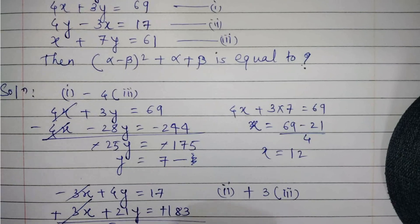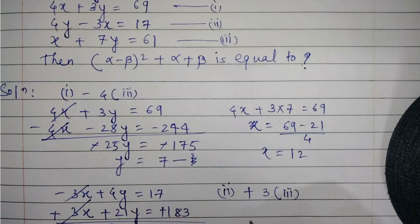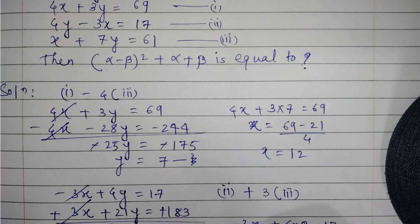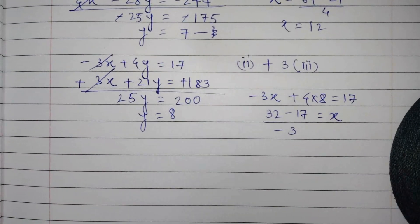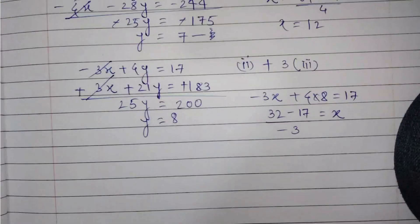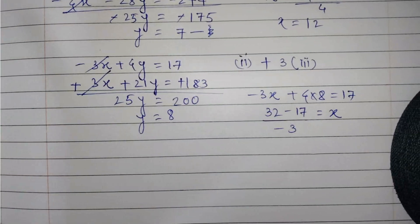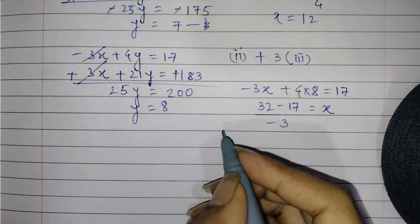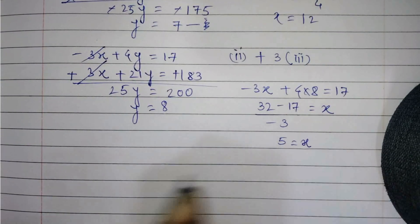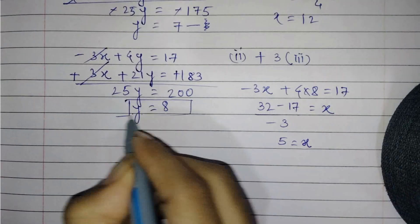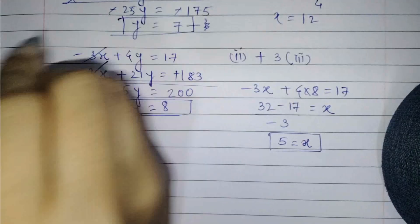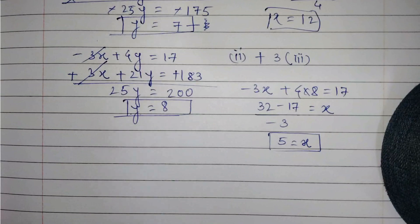So y equals 8. Similarly, substituting back: minus 3x plus 4 times 8 equals 17, giving 32 minus 17 equals 15, so minus 3x equals minus 15, thus x equals 5. So from the second and third equations, we get x equals 5 and y equals 8. Before, we had x equals 12 and y equals 7.